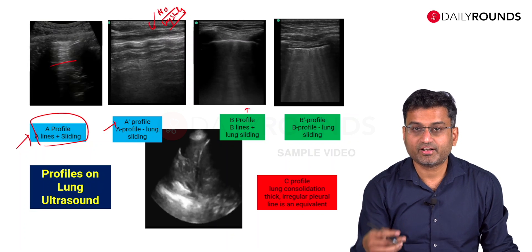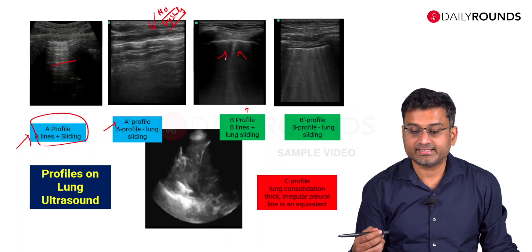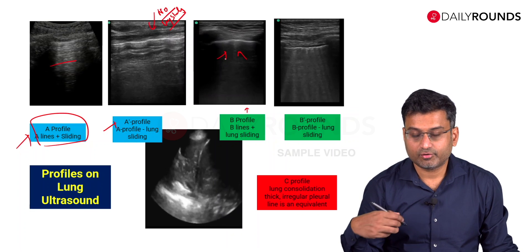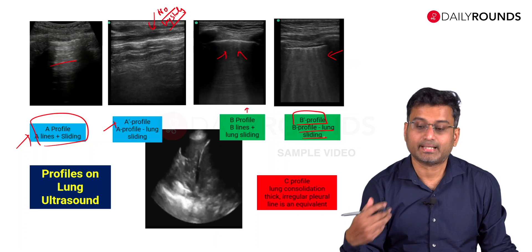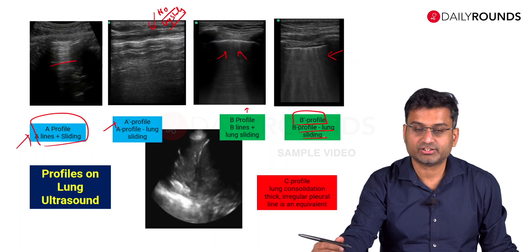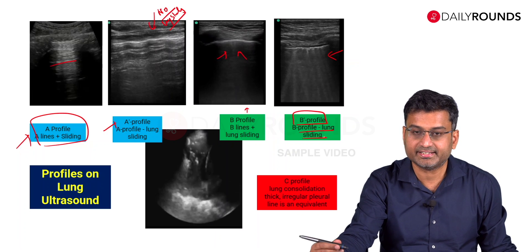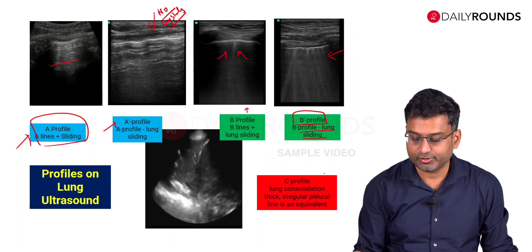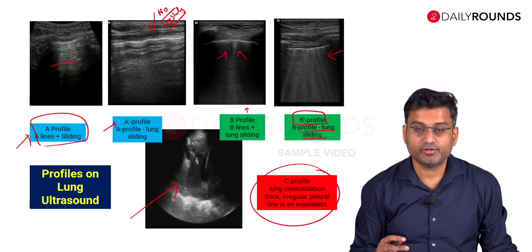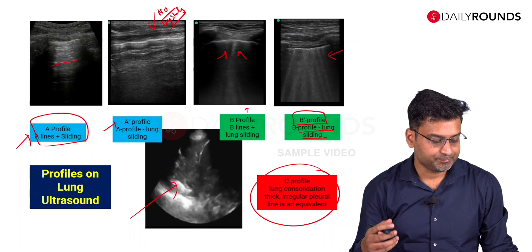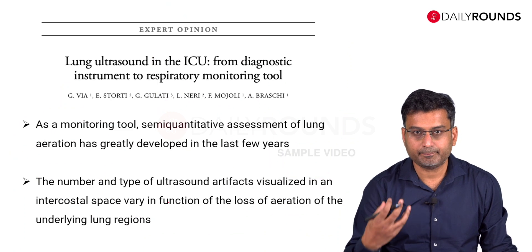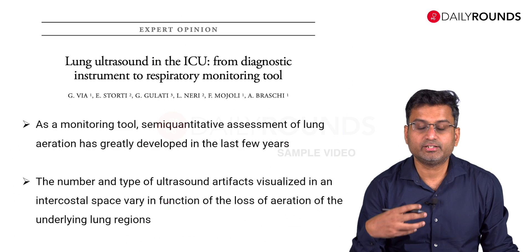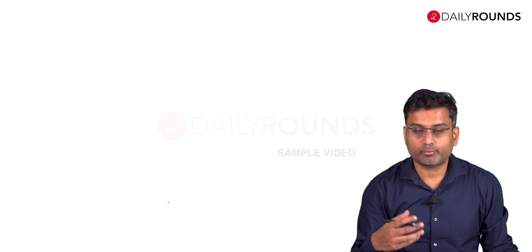The B profile has vertical comet-tail lines, generally indicating some degree of fluid overload or loss of aeration. Then there is the B prime (B') profile, where you have a B profile but lung sliding is absent — this can be seen in patients with consolidation, significant loss of aeration, ARDS, or pneumonias. Finally, the C profile is seen when you have tissue-like consolidation of the lung, generally indicating severely diseased lungs. These are the characteristic profiles in lung ultrasound and how they can guide fine-tuning of mechanical ventilation.